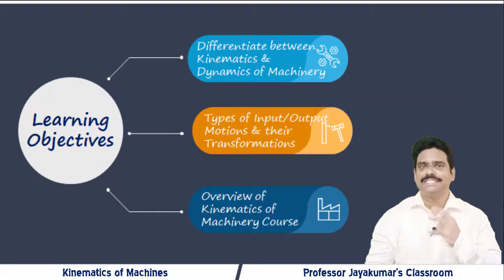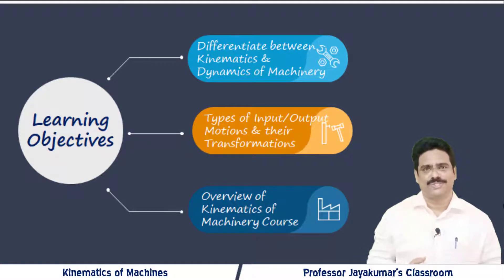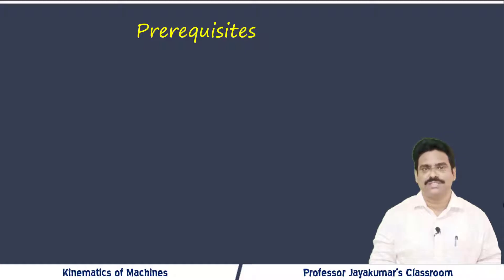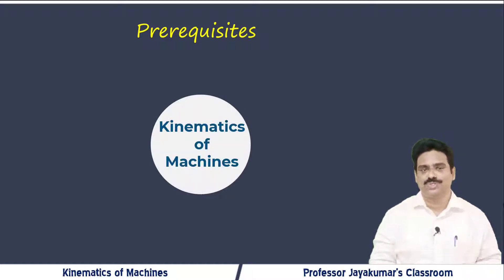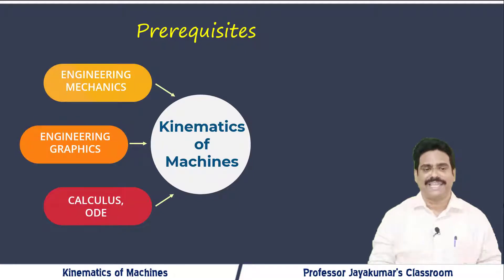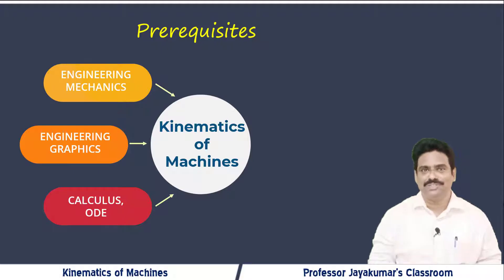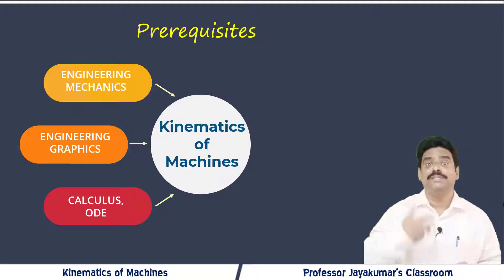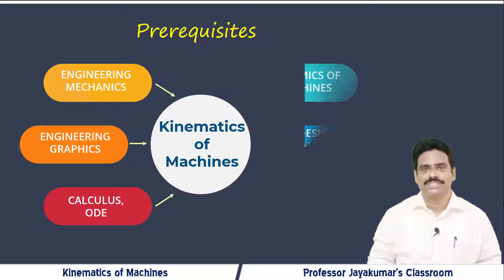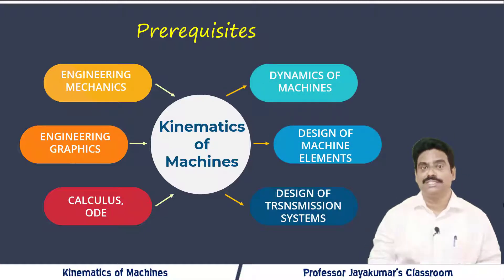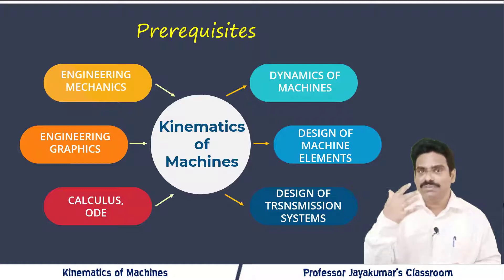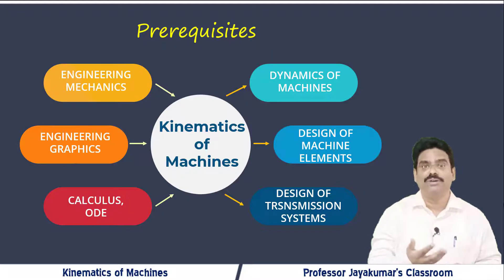In this video let us see an overview of this course — what are the prerequisite concepts or courses one should have studied before going into this course. We need knowledge of engineering mechanics, engineering graphics, and maths courses namely calculus and ordinary differential equations. Also, this Kinematics of Machinery course will be a prerequisite to study many other courses namely dynamics of machines, design of machine elements, and design of transmission systems. In order to thoroughly understand all the concepts of these courses, we must have a firm grip over the concepts of kinematics of machines.